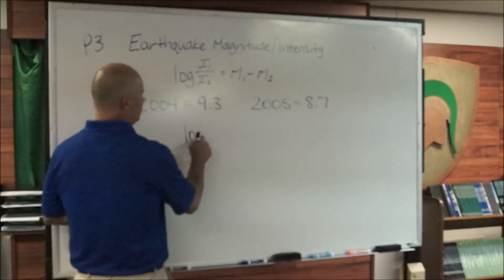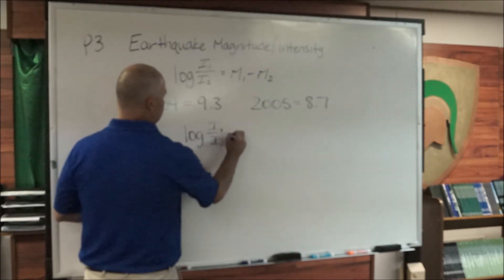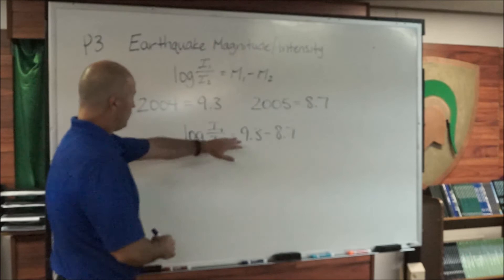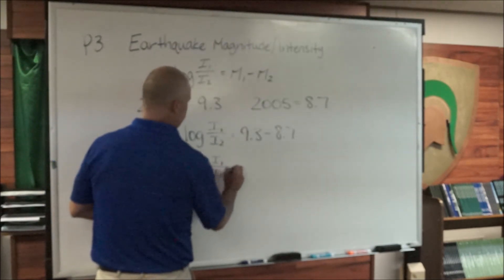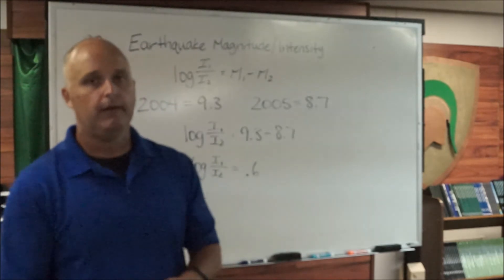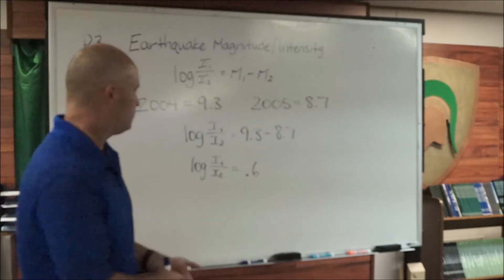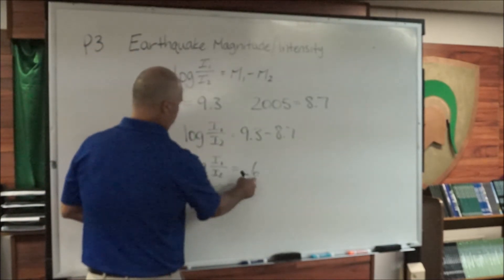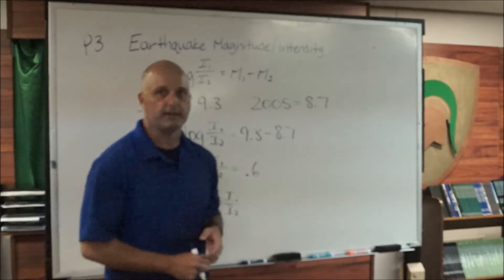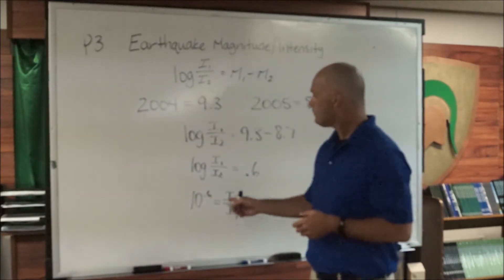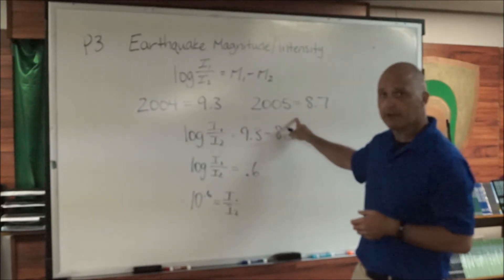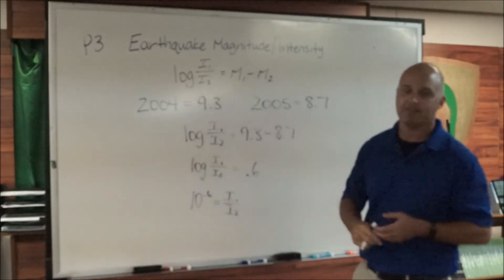We've got log base 10 of intensity 1 over intensity 2 equals 9.3 minus 8.7. Working this down, this becomes log of intensity 1 over intensity 2 equals 0.6. Now we have a base, an x, and a y, so we change this to exponential form. Our base is 10, our exponent is 0.6, and the difference in intensity is 10 to the 0.6, which is approximately 4. So the 2004 earthquake was approximately 4 times stronger than the 2005 earthquake, even though they were only 0.6 apart on the Richter scale.